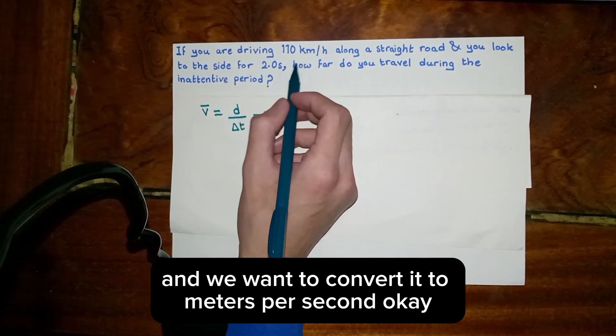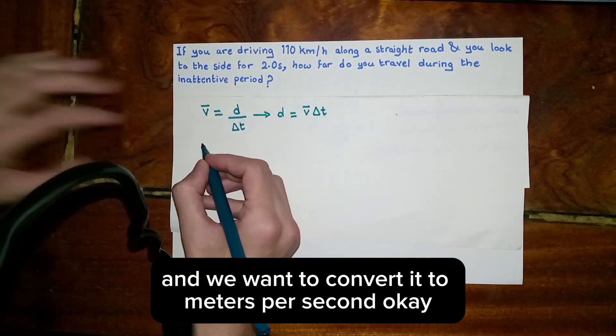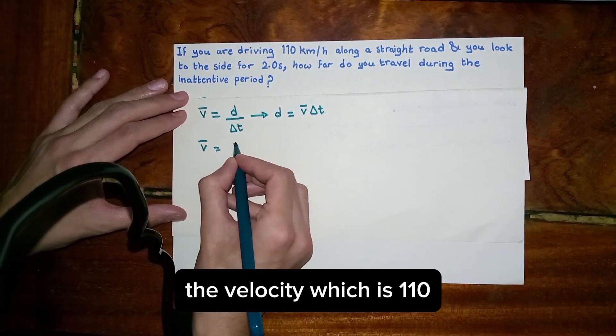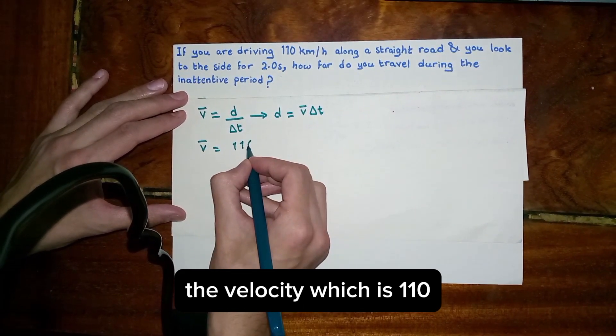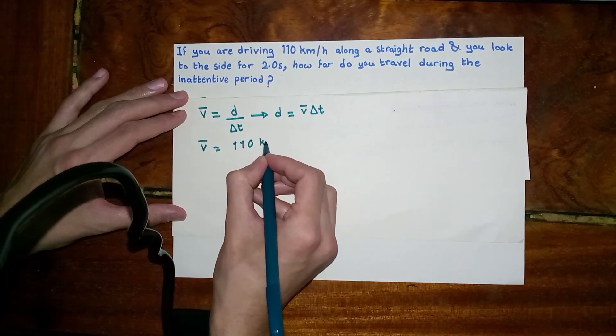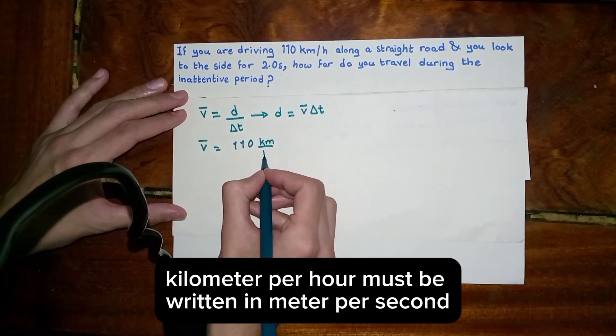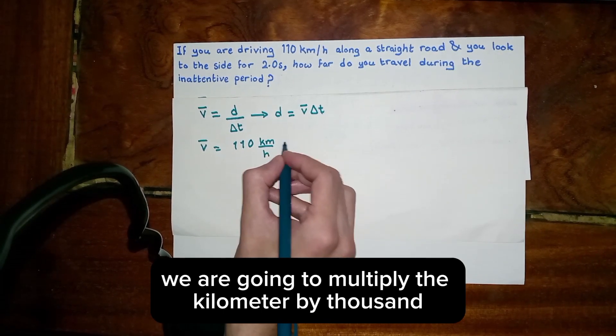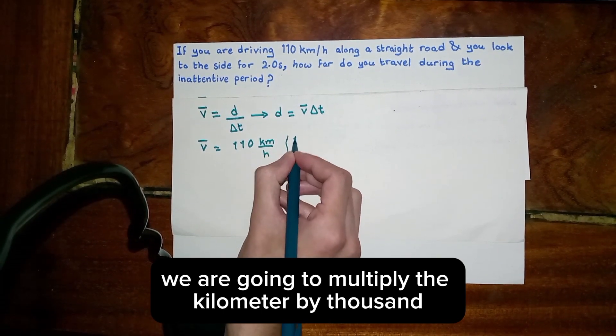Okay, so let's convert it. The velocity, which is 110 km per hour, must be written in meters per second. We are going to multiply the kilometers by 1000.